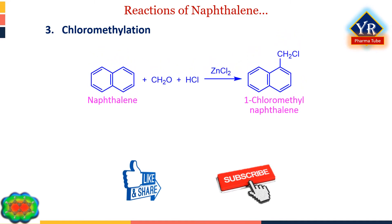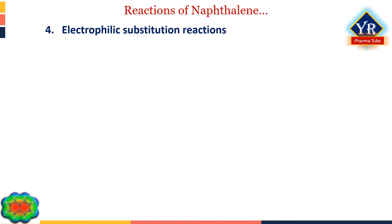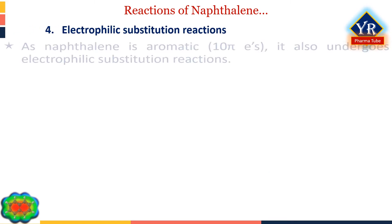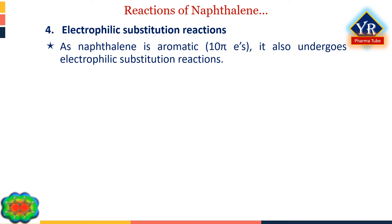Addition of a chlorine and methyl group to a chemical compound is a chloromethylation reaction, normally done using formaldehyde and hydrochloric acid. Here, naphthalene reacts with formaldehyde and hydrochloric acid in the presence of zinc chloride to form 1-chloromethylnaphthalene.